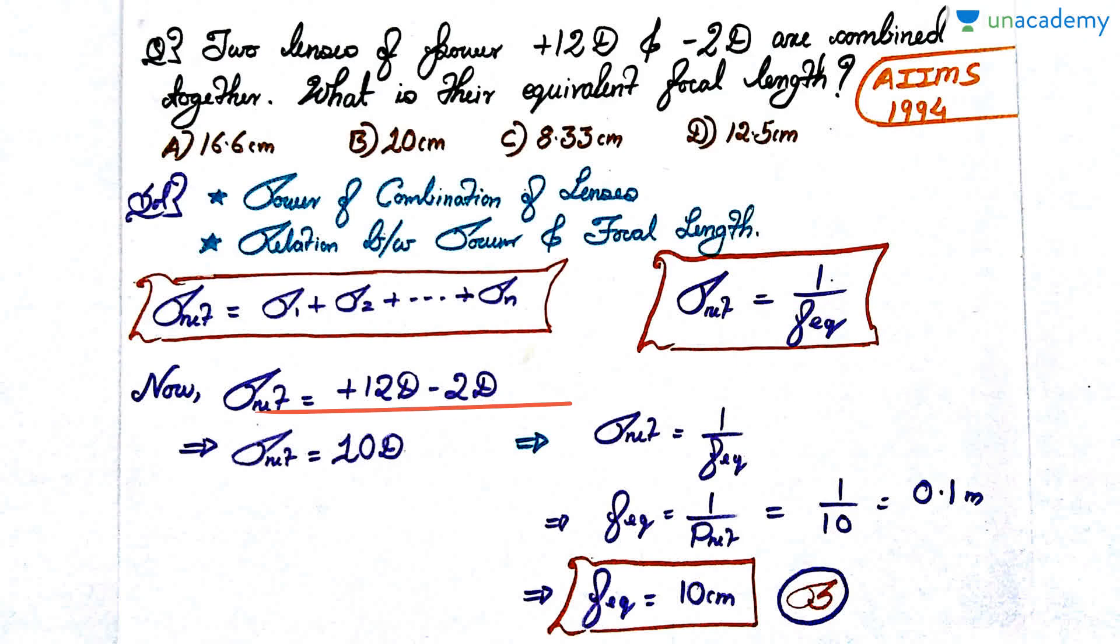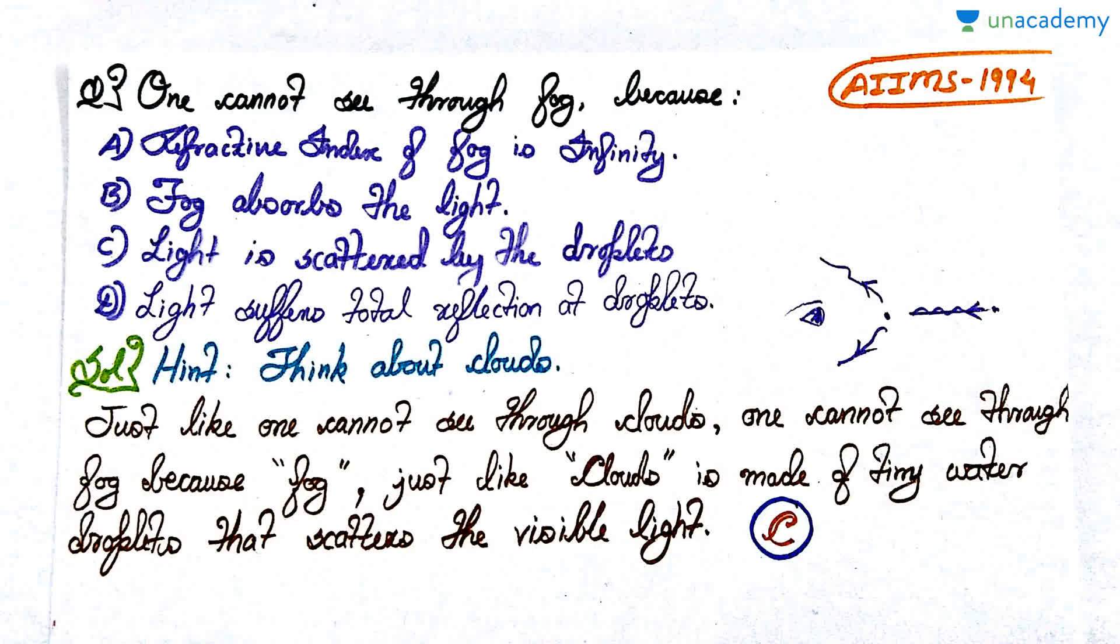Here the two individual powers when added up, P1 + P2 gives total power net of 10 diopters. So f_equivalent = 1/P_net = 1/10 = 0.1 meters, which comes out to be around 10 centimeters. Option B would be the correct answer.